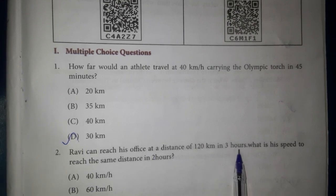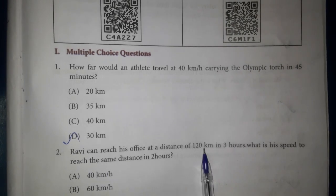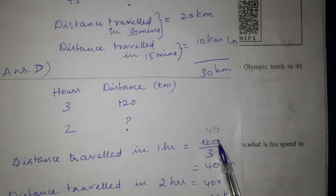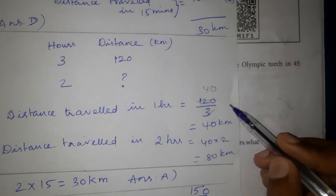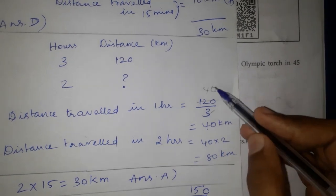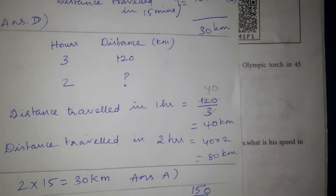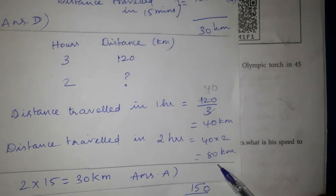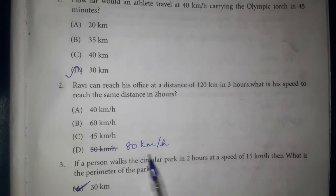Second one. Ravi can reach his office at a distance of 120 km in 3 hours. What is his speed to reach the same distance in 2 hours? 3 hours is 120 km. 120 divided by 3 gives 40 km per hour. So 2 hours is 80 km per hour.